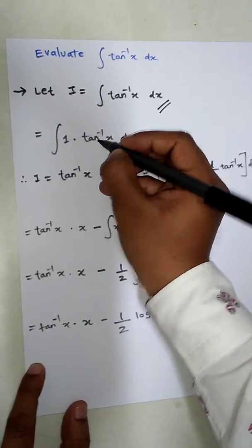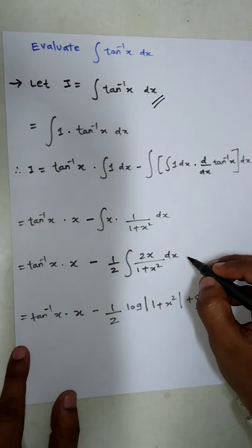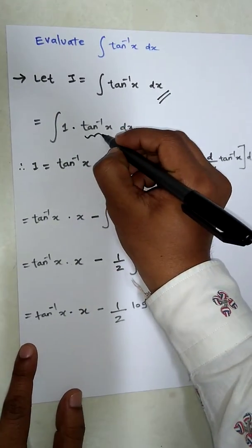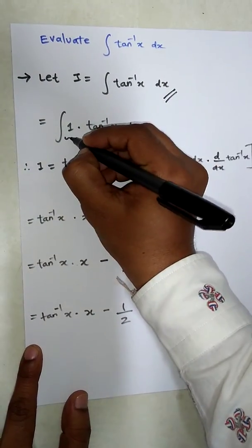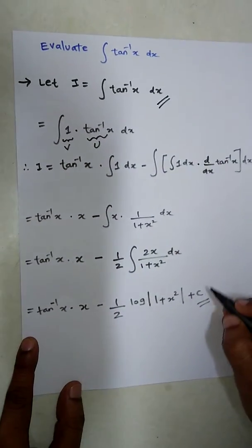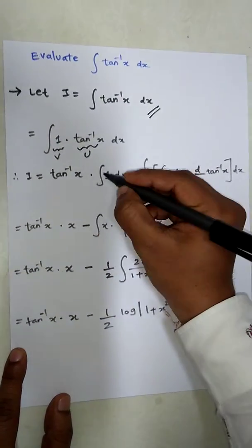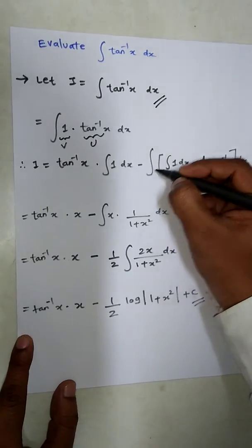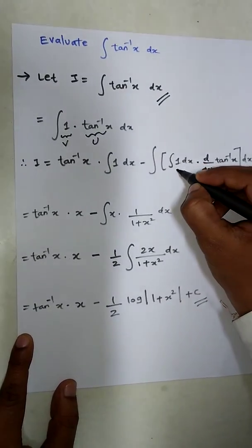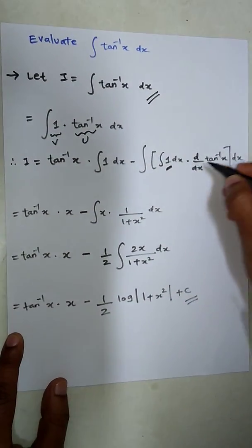In proper form, 1 into tan inverse x. Now in this case, this part will be your u and this part will be your v. So u into integration of v minus integration of integration of v into derivative of u.